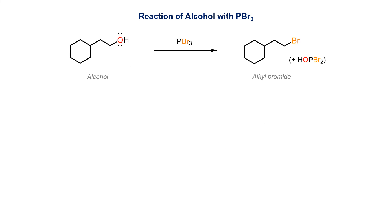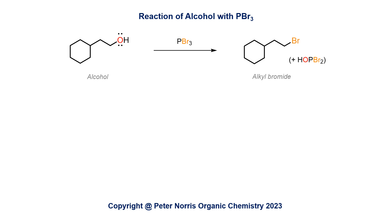PBr3 is a useful alternative to HBr for the conversion of alcohols to alkyl bromides. The OH group is activated as a phosphite that is then displaced by bromide anion. The method is compatible with a broad range of other organic functional groups.